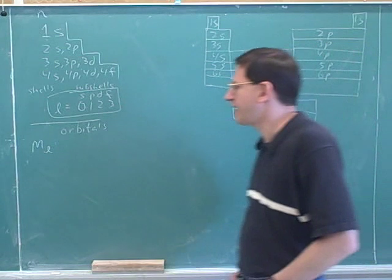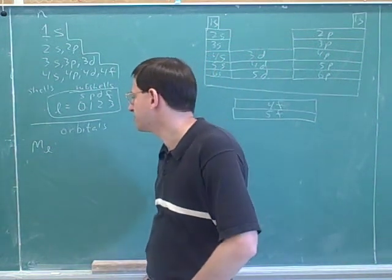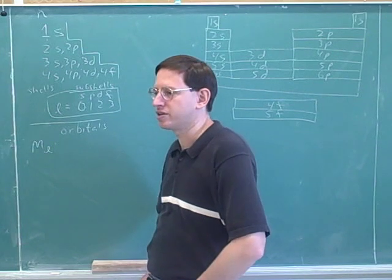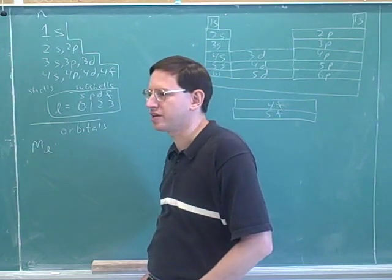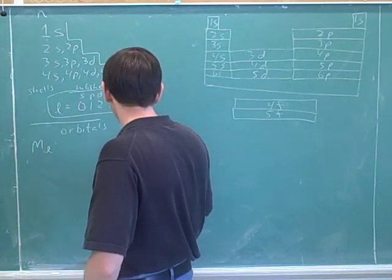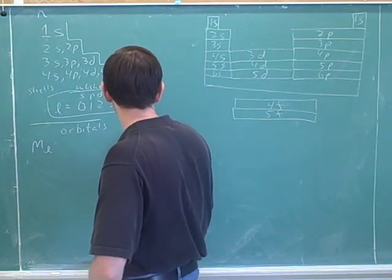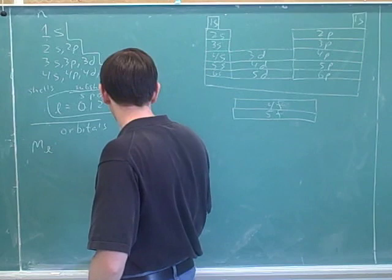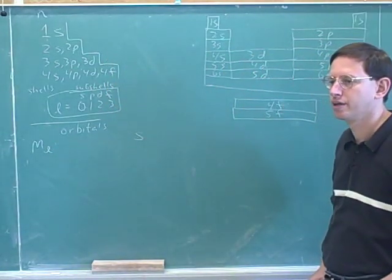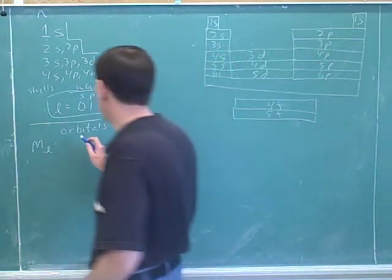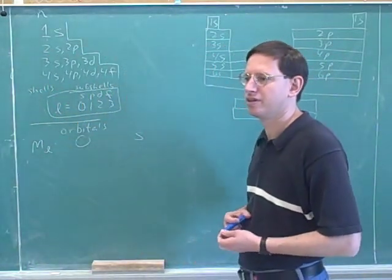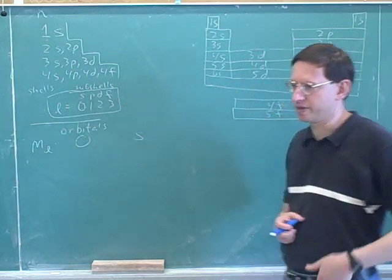The key for the m sub l values is that the possible m sub l's are always centered at zero. They're a series of integers centered at zero. For example, if we're in the s-block, there's only one orbital and it's called m sub l equals zero — the zero-th orbital.